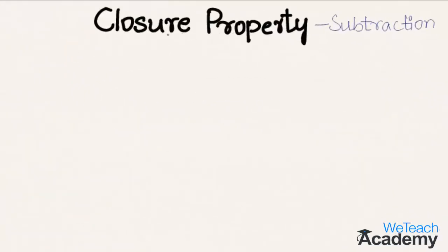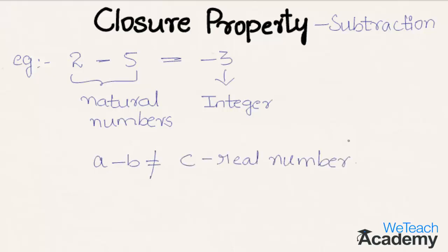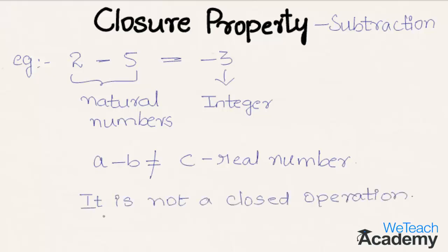Now let us discuss closure property on subtraction. Consider two natural numbers, 2 and 5. When we subtract them, 2 minus 5 equals minus 3, which is an integer, not a natural number. So closure property is not applicable for subtraction — symbolically, a minus b will not necessarily equal c, a real number of the same set — and hence subtraction is not a closed operation.